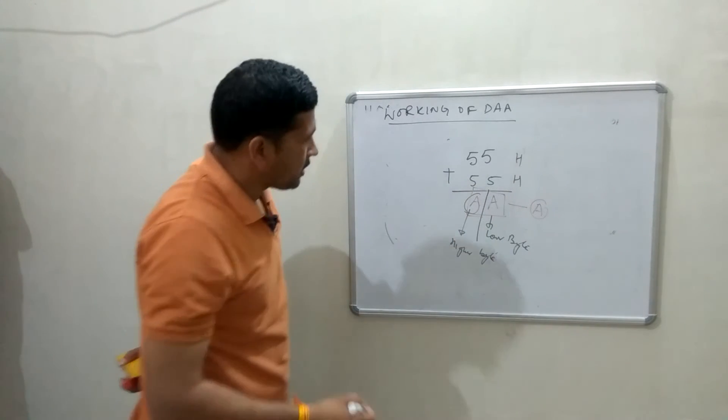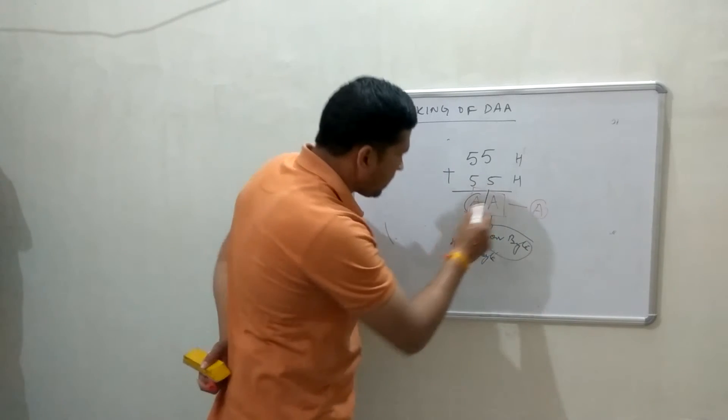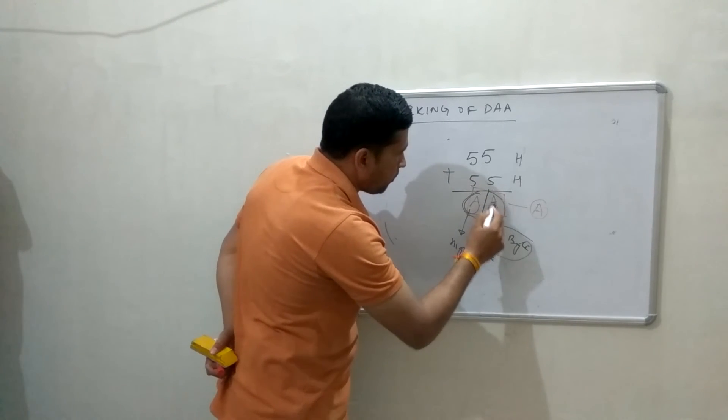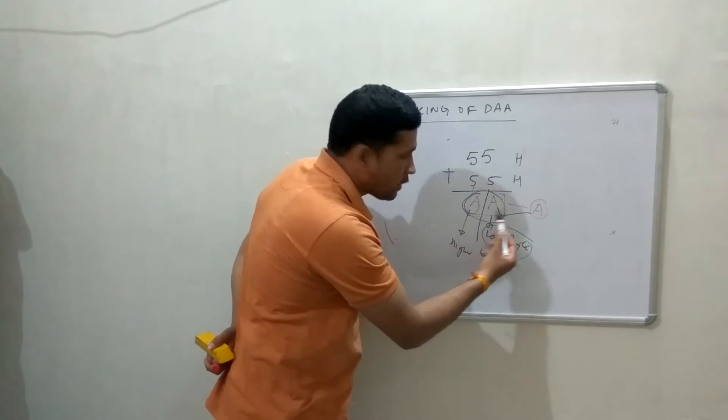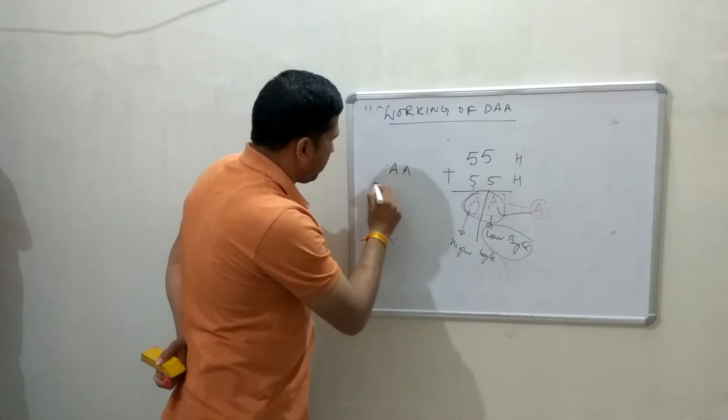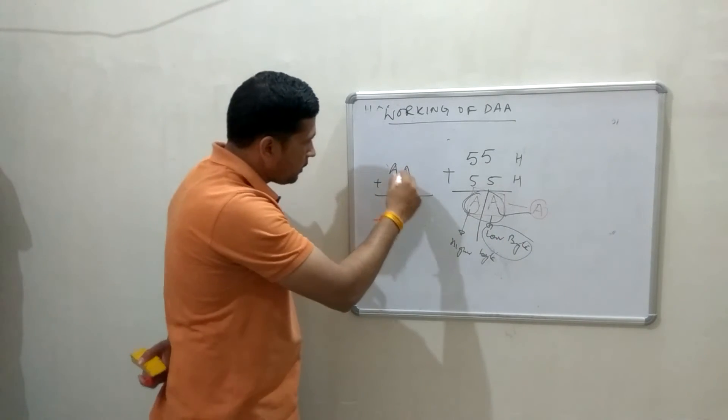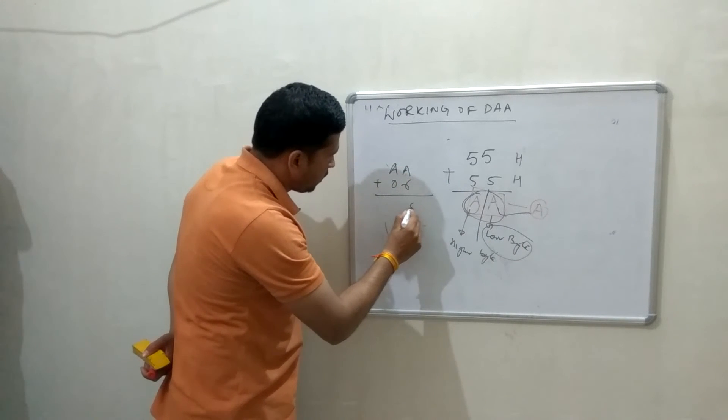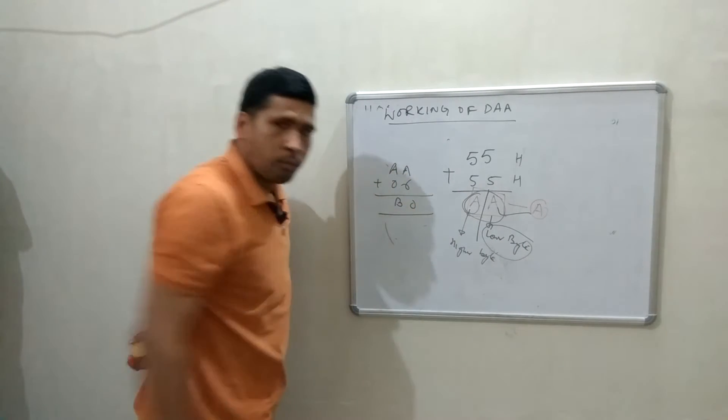Now, first condition is, if lower byte is greater than 9, in this case, lower byte is greater than 9, it will add 06. Plus 06. Now, what effect? This will be 0, this will be B0.